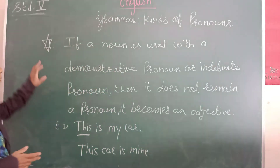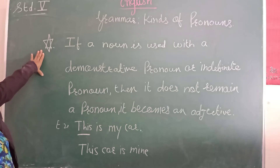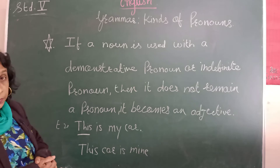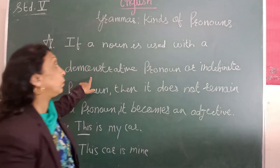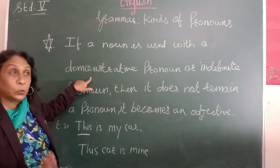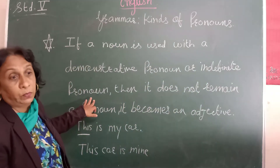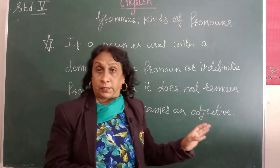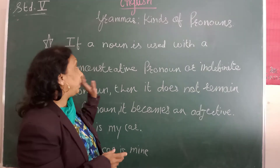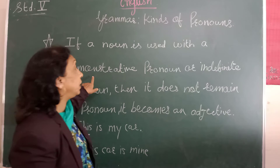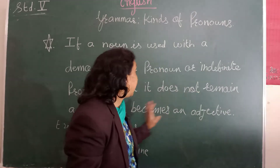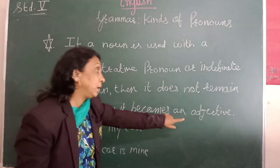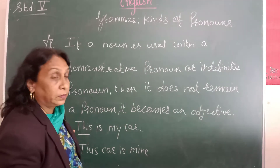Now here is one main point to remember: a pronoun is a word used instead of a noun. If a noun is used with a demonstrative pronoun — this, that, these, those — or with an indefinite pronoun — some, any, anybody — then it does not remain a pronoun; it becomes an adjective. For example, 'This is my car' — here 'this' is a pronoun. But 'This car is mine' — here 'this' becomes an adjective.